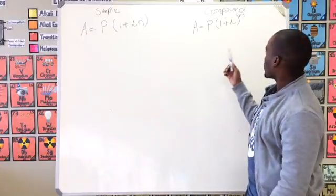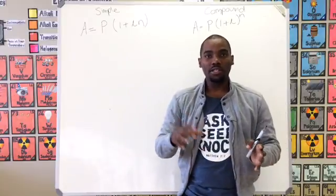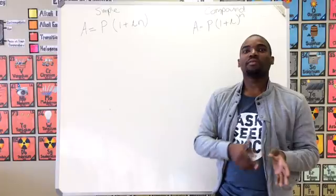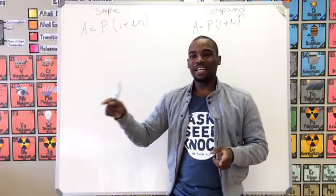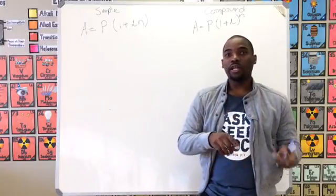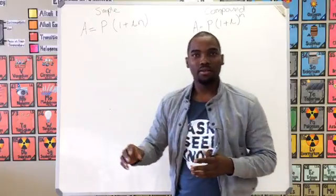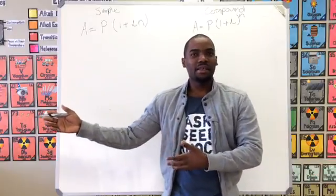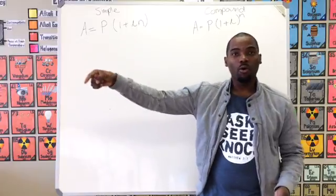Compound interest is slightly different because the interest gained is on the whole amount including the previous interest. So the first year you'll have a hundred and ten grand. But the second year you'll get 10% of a hundred and ten grand, which will be 11 grand, giving you 121 grand. Then the third year your interest is built on that amount — about 12 grand — and your interest amount keeps growing more and more with time.